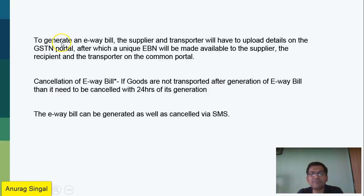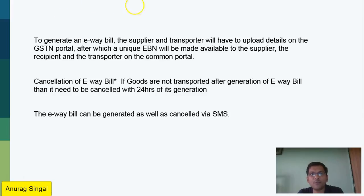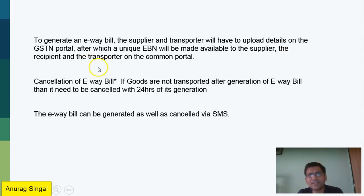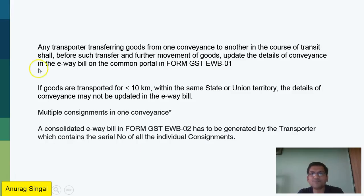So where is the e-way bill required? What you need to do is: the supplier and transporter need to upload details to the GSTN portal, and then an EWB number — the e-way bill number — is generated, which is shared with the supplier, recipient, and transporter. If you don't want to transport the material, you can cancel the e-way bill within 24 hours. You can also generate the e-way bill via SMS.